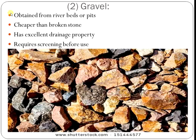The next type is gravel. Gravel is obtained from river beds or pits. It is cheaper than broken stone — that is, the cost is less. It has excellent drainage property but requires screening before use. This type of ballast is used where it is sourced from river beds or pits and is valued for its good drainage property.